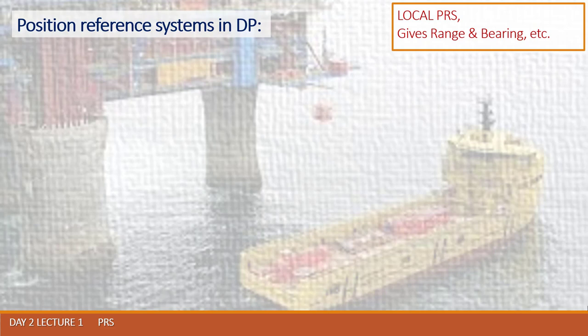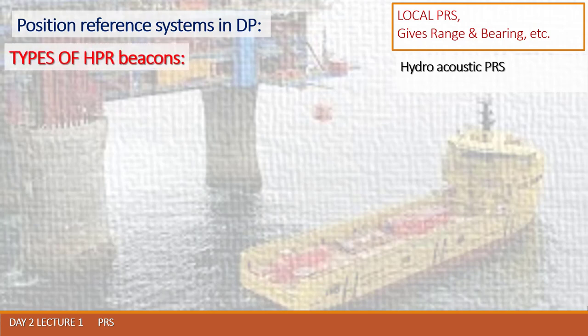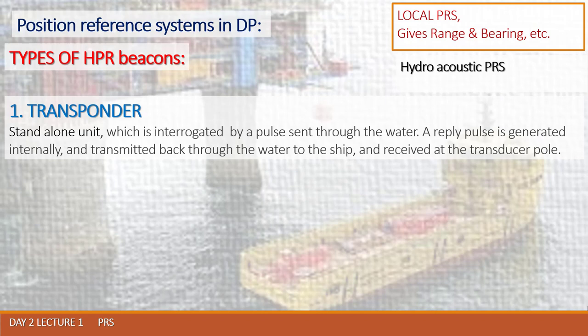The stationary part of the HPR system is placed on board, but the second part of the equipment is placed at the sea bottom. HPR beacons used for the HPR station are divided into three main operational types. The first type is called a transporter — a standalone unit which is interrogated by a pulse sent through the water. A reply pulse is generated internally and transmitted back to the ship, received at the transducer pole, which is the antenna itself mounted on board the vessel.